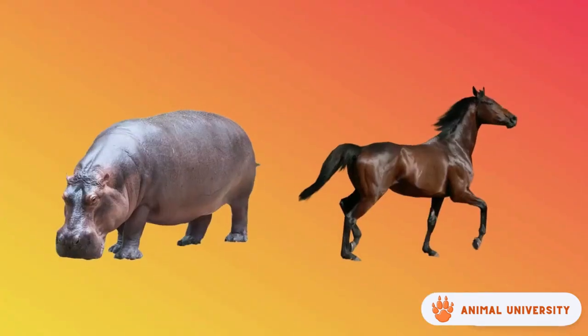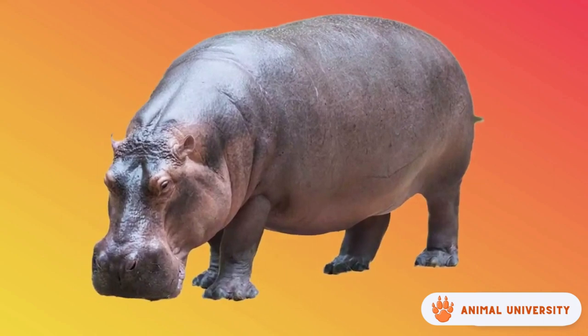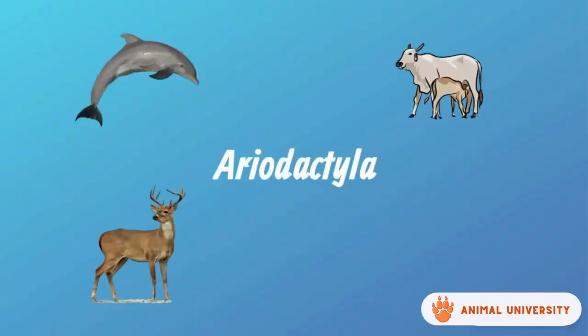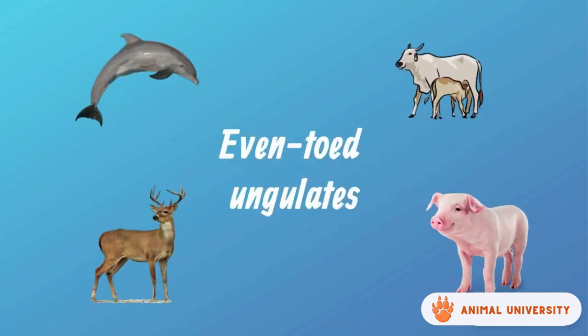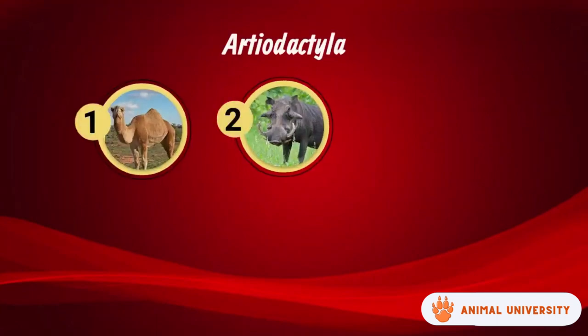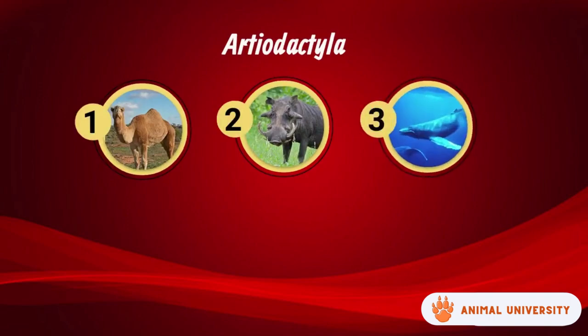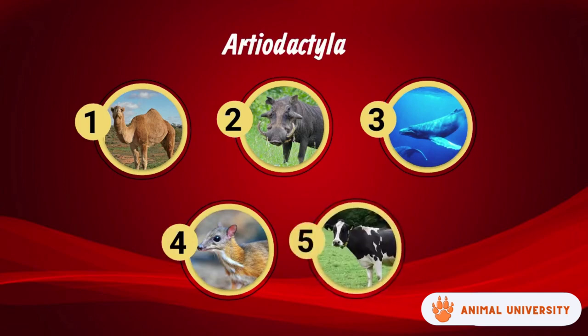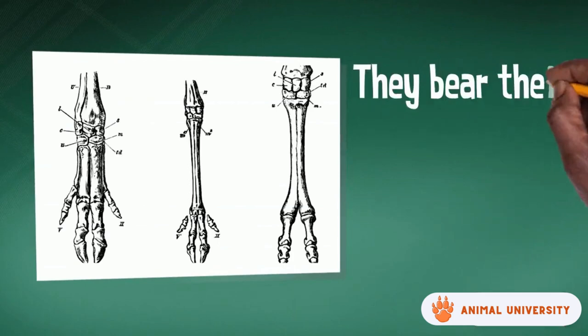Now let's talk about the two groups of ungulates, starting with the most diverse of the two, which is Artiodactyla. Artiodactyla is the most common and diverse group of ungulates. They are also known as even-toed ungulates. They are classified into five groups: Tylopoda or camels, Suina which includes pigs and boars, Whippomorpha which contains whales and hippos, Tragulidae or chevrotains, and lastly Pecora.